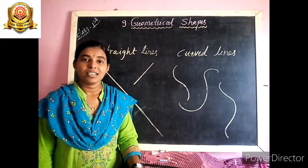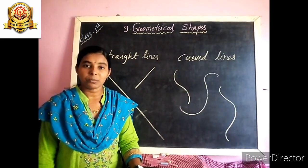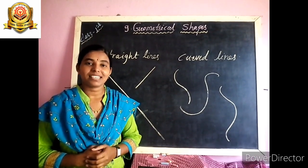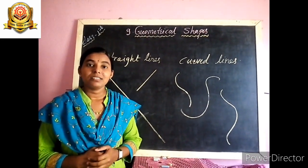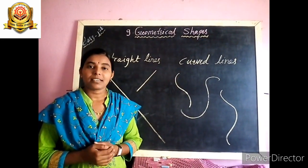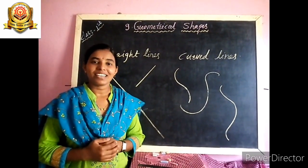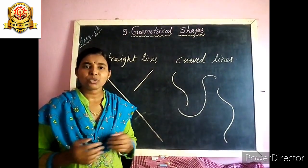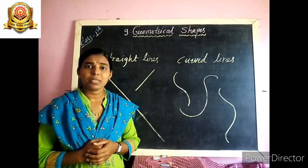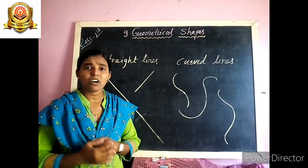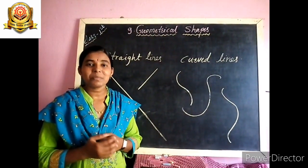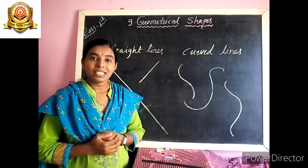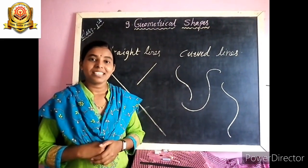What is a shape? The shape of an object tells us what it exactly looks like — how that object looks. In our surroundings, at home and in class, there are so many objects. We see many objects and the shapes of those objects are different. We see many shapes around us.